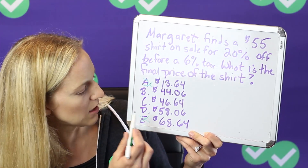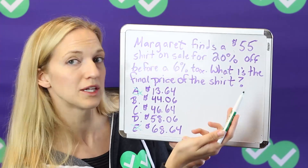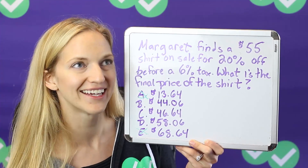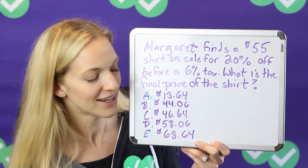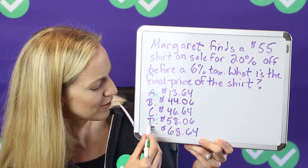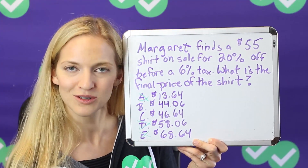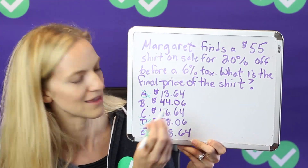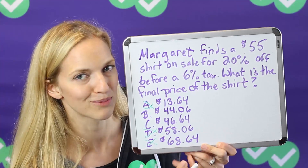But let's push this a little further. Answer choice D is $58.06. We have a $55 shirt at 20% off — that's a significant discount. Adding 6% tax back on after a 20% discount shouldn't bring the price higher than the original $55, so we can eliminate that one too. You'll often find on the ACT that you end up with two answer choices that are pretty close. Sometimes you can estimate all the way to the right answer; other times you need to guess between two. But 50-50 odds if you didn't know how to do the problem is pretty good.